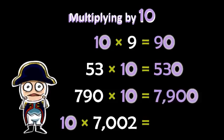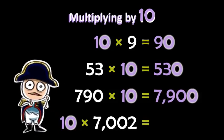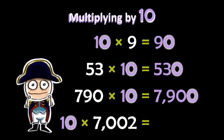Multiplying by 10 is the same as multiplying by one, but we move every digit to the next place value spot by putting a zero in the ones place. Now you try.